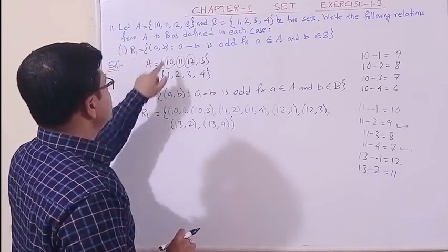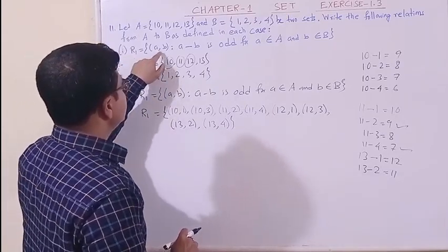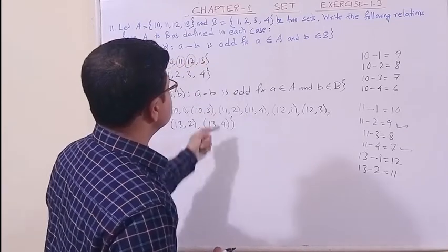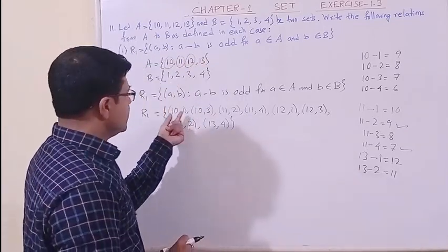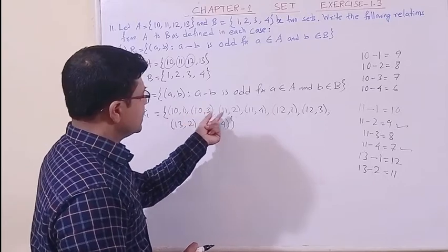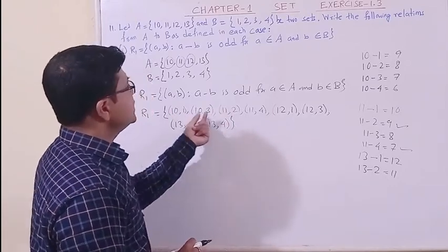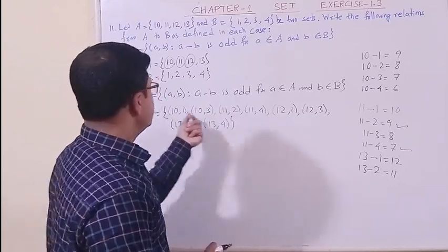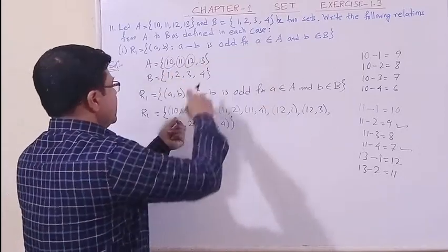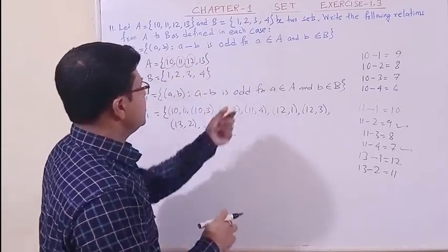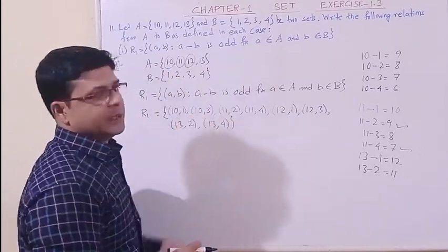R1 we have constructed with the ordered pairs (a, b) such that a minus b is odd. Here, in each case, the elements you see a minus b is odd for a belongs to set A and b belongs to set B.